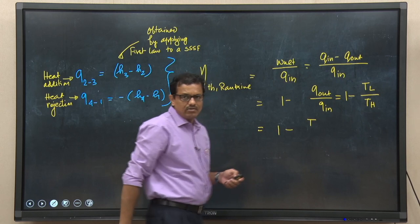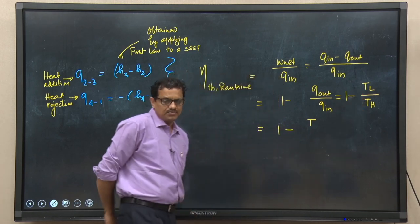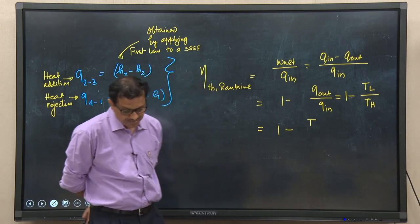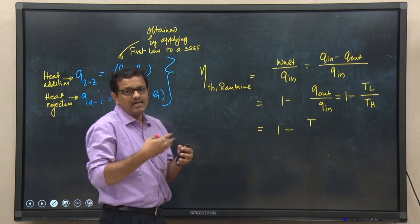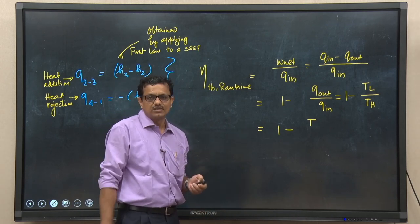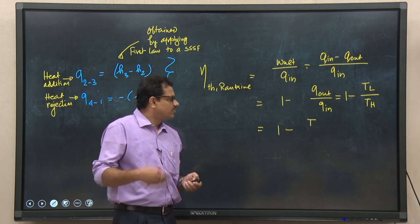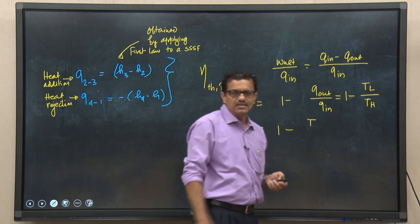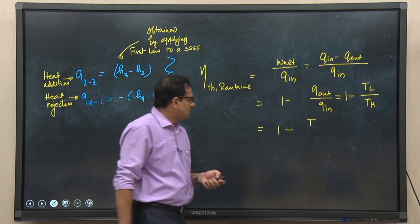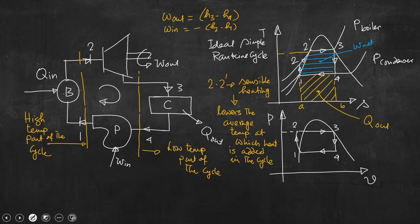The conclusion is: for the Carnot cycle, eta_Carnot = 1 - T4/T3. But for the Rankine cycle, eta_Rankine = 1 - T4/T_min, where T_min is the mean temperature of heat addition. Since T_min is less than T3, the mean temperature at which heat is added to the Rankine cycle is less than the temperature at which heat is added in the Carnot cycle, and therefore the efficiency is less.